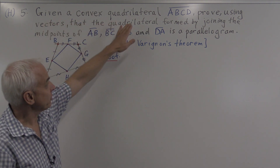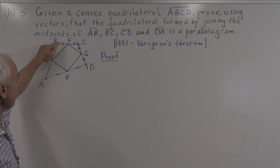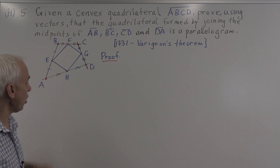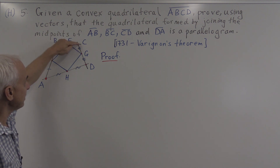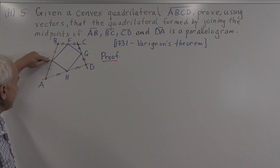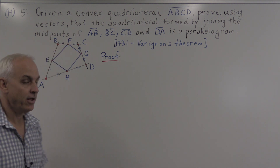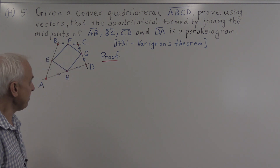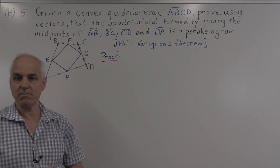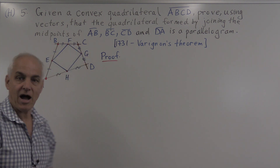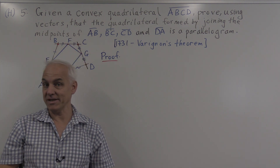Here is what he proved: given a convex quadrilateral ABCD — here it is — prove using vectors that the quadrilateral formed by joining the midpoints of AB, BC, CD, and DA — in other words this quadrilateral formed from points E, F, G, and H — is always a parallelogram, which means the opposite sides are always parallel. These two sides are parallel and these two sides are parallel, no matter which kind of convex quadrilateral ABCD we start with.